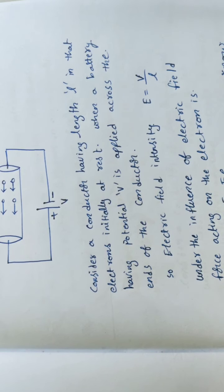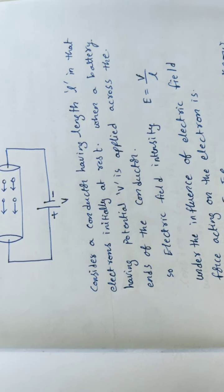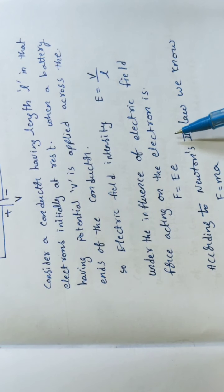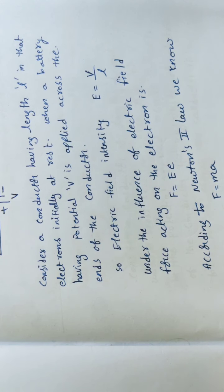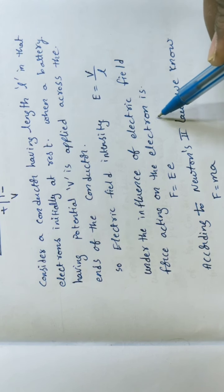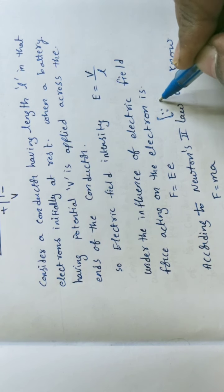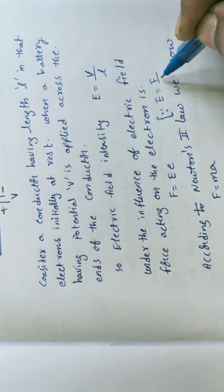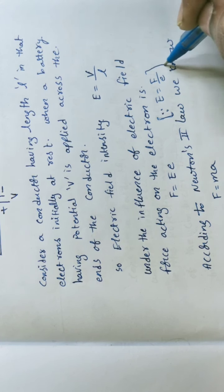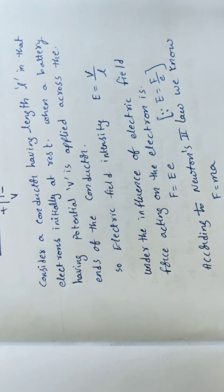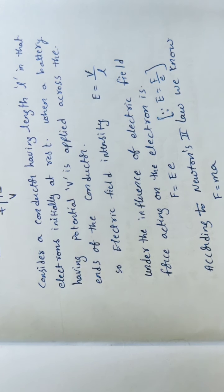The electric field intensity is represented as E = V/L, derived from the relation E = −dV/dr. Under the influence of this electric field, a force acts on the free electrons. The force acting on an electron is F = Ee, since by the definition of electric field intensity, E = F/charge, and the electron charge is represented as e.